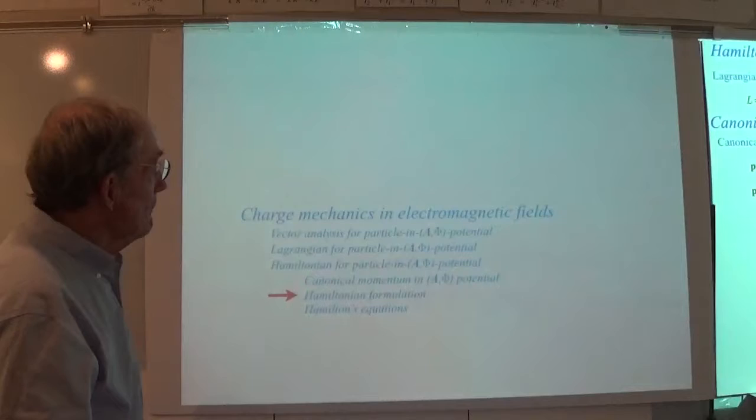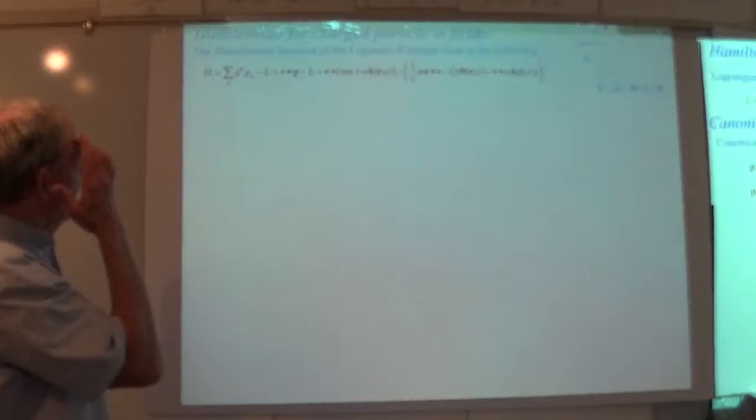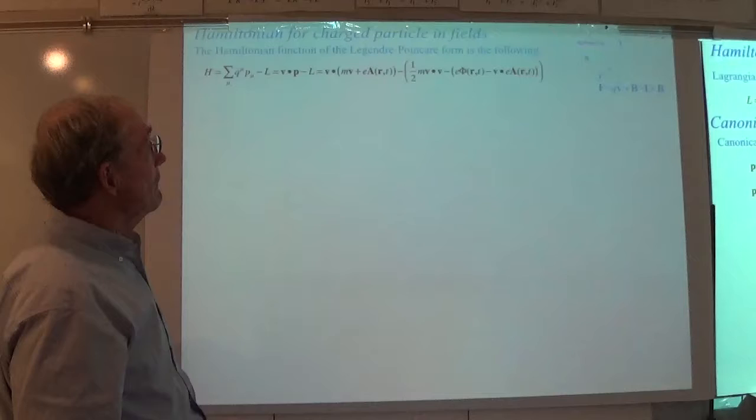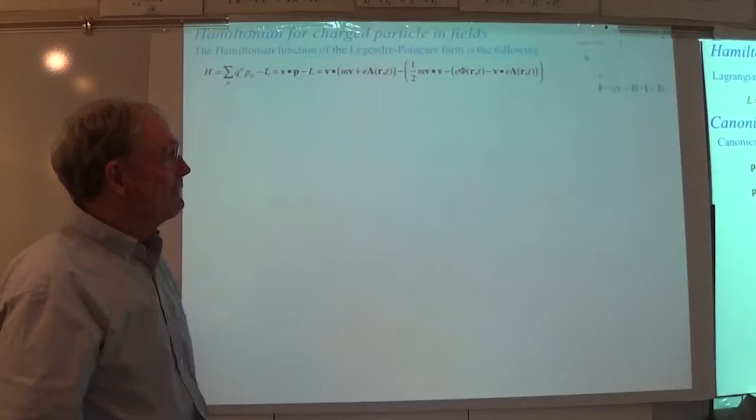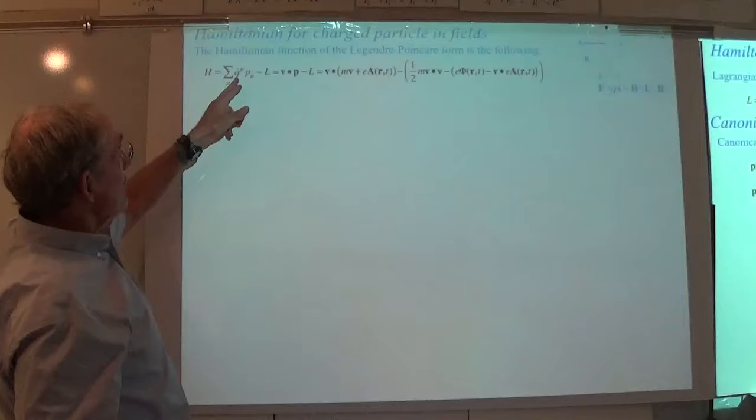Now Hamilton — what's he got to say? How do you get the Hamiltonian? In this class, you get it from Legendre or Poincaré — two French guys. Velocity dot p minus the Lagrangian that we've just written: velocity dot our new p, minus that Lagrangian with scalar minus vector A.